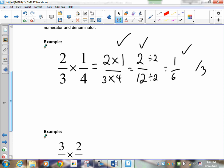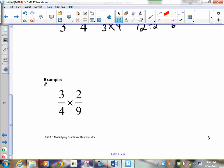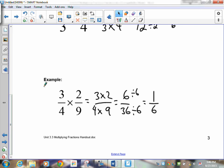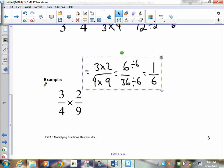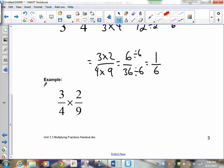Now, take a look at the next one. Pause the recording and do it. So I'm going to do it the old way first, and then I'm going to do a canceling way. So first off, 3 times 2 over 4 times 9. 3 times 2 is 6. 4 times 9 is 36. You can divide both of these by 6. 6 divided by 6 is 1. 36 divided by 6 is 6. Your answer is 1 sixth. That's one way.